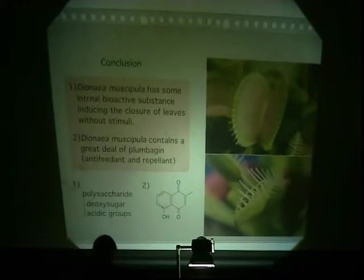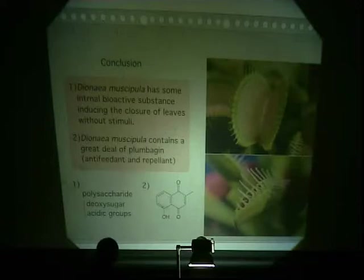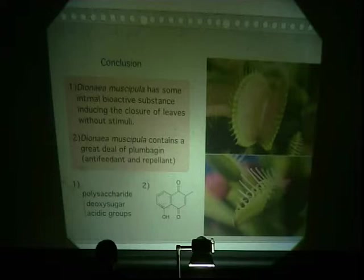In conclusion, we found that Dionaea has some internal bioactive substances which induce the closure of traps without stimuli. These bioactive substances would be a clue for the interpretation of the memory observed in the movement of Dionaea at the molecular level. We also found that Dionaea contains a great deal of plumbagin, known as an anti-feedant and repellent, and so Dionaea would defend itself from predators such as animals, birds, or insects by virtue of these compounds.